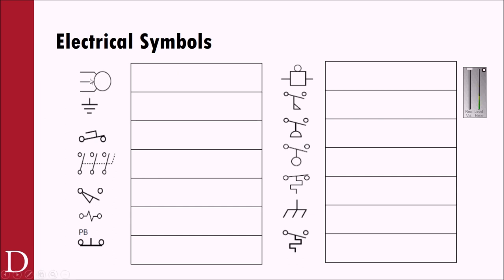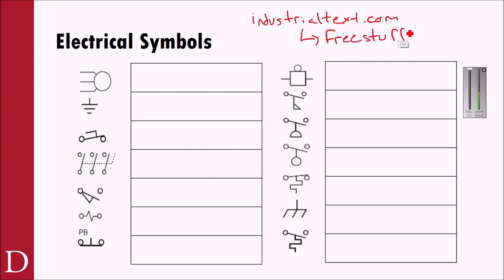Now let's look at some electrical symbols you'll encounter on prints. If you go to industrialtext.com, under their free stuff section you can get free IO listing sheets, program listing sheets, and a link to process electrical symbols — P&ID symbols. They have as many as a hundred or more symbols listed there. I've got about 14 here, which covers the bulk of what we use in the lab.